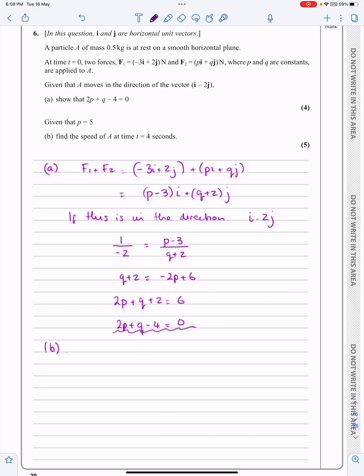It says, given that P is equal to 5. If they tell me P is equal to 5, I'll be able to work out Q by putting P equals 5 in there. So P and Q I'm going to have. Find the speed of A at T equals 4 seconds. Well, this is what I said earlier on. Let's find the acceleration, and once I've got the acceleration, I should be able to use V equals U plus AT to work out anything else. Let's not get ahead of ourselves.